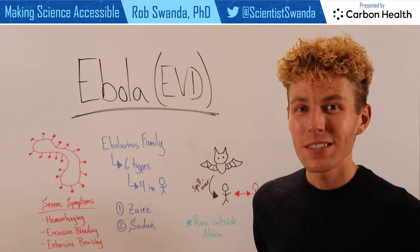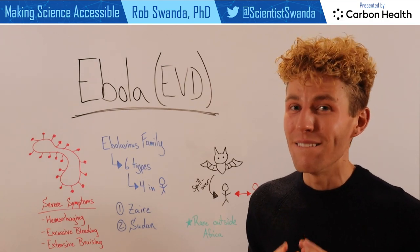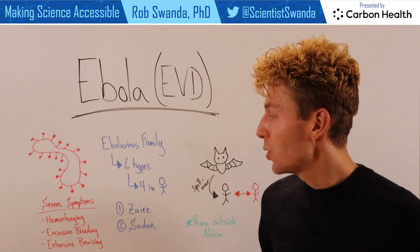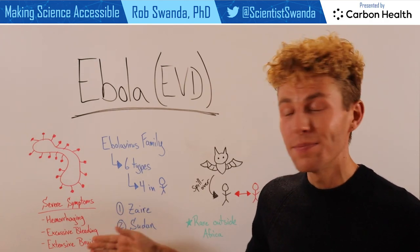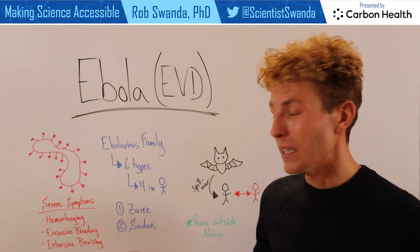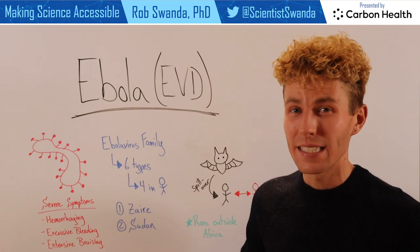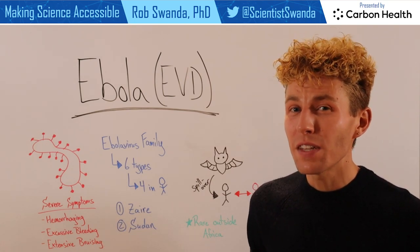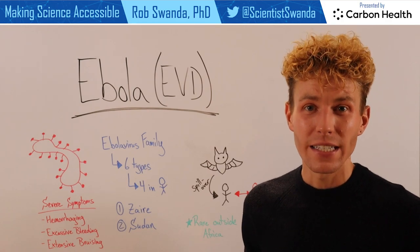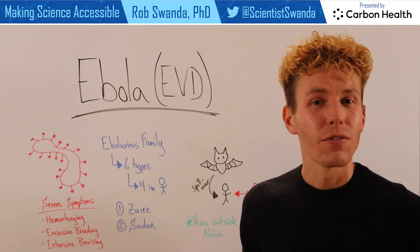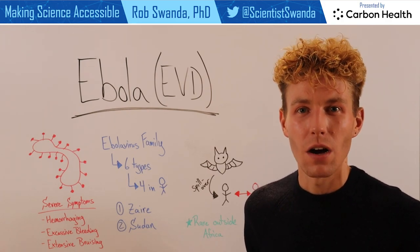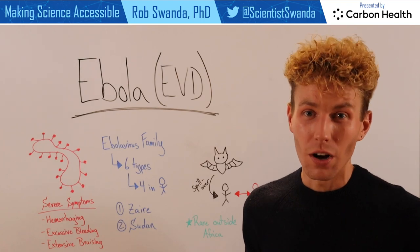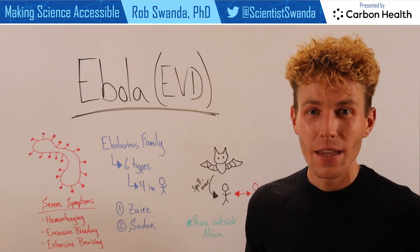These viruses can cause very severe symptoms, including hemorrhaging, excessive bleeding, and extensive bruising. This causes about a 50% fatality rate, and of course that depends on what strain you get and where you are when you are infected.